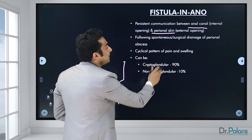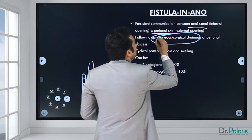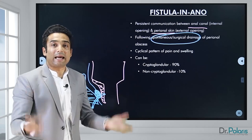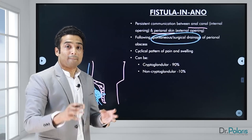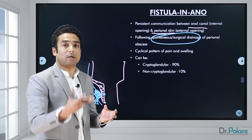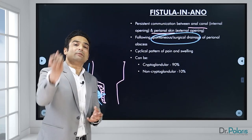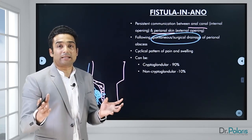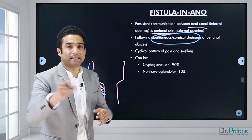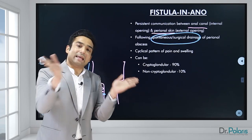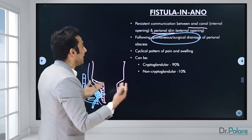The fistula can follow spontaneous or surgical drainage of a perianal abscess. If there was a perianal abscess that either burst out spontaneously or the drainage done was inadequate, this results in further collection of pus. The pus has to come out, and the easiest way is via one opening near the anal canal and one through the skin — that is when an anorectal abscess develops into a fistula in Ano.